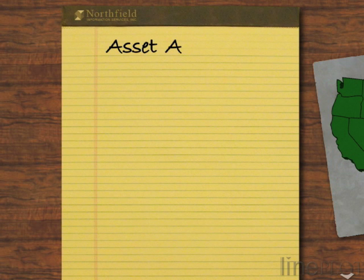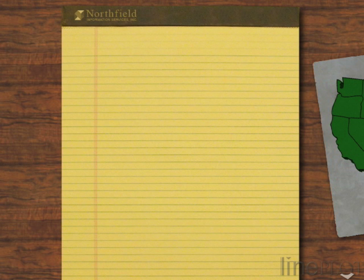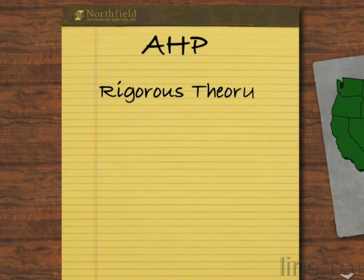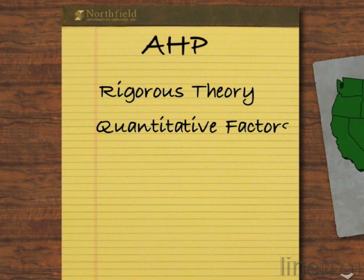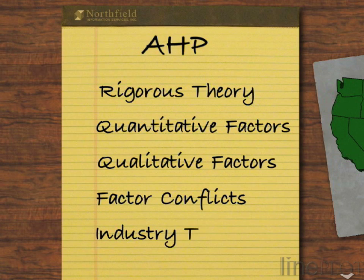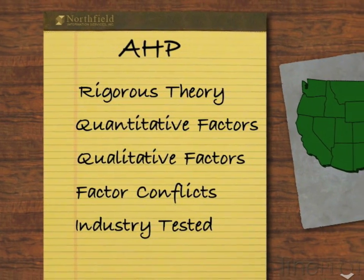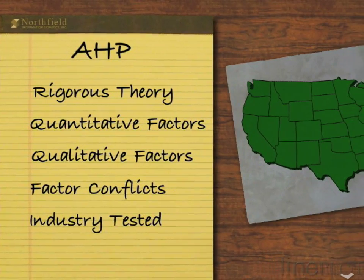Northfield introduces a significant innovation to the problem of asset allocation: the Analytic Hierarchy Process. AHP is a robust and elegant methodology for applying common sense considerations to complex real-world problems. The technique was specifically developed to optimize decision-making with qualitative, potentially conflicting factors. AHP is a common decision support tool in industrial management to assist in making complicated, often irreversible decisions.